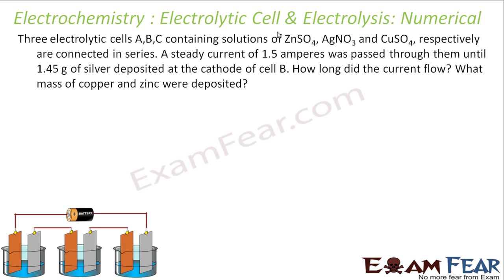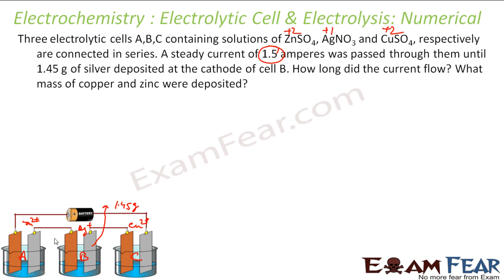Three electrolytic cells A, B, and C containing solutions of zinc sulfate (Zn²⁺), silver nitrate (Ag⁺), and copper sulfate (Cu²⁺) respectively are connected in series. A steady current of 1.5 ampere is passed until 1.45 g of silver is deposited at the cathode of cell B.